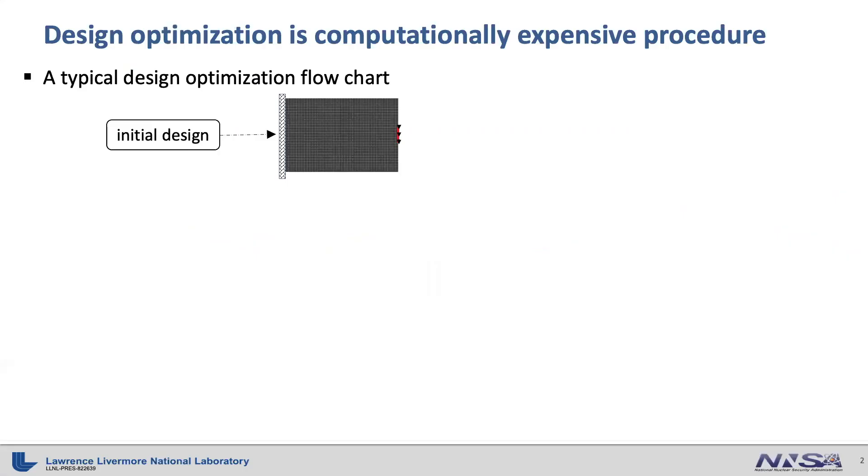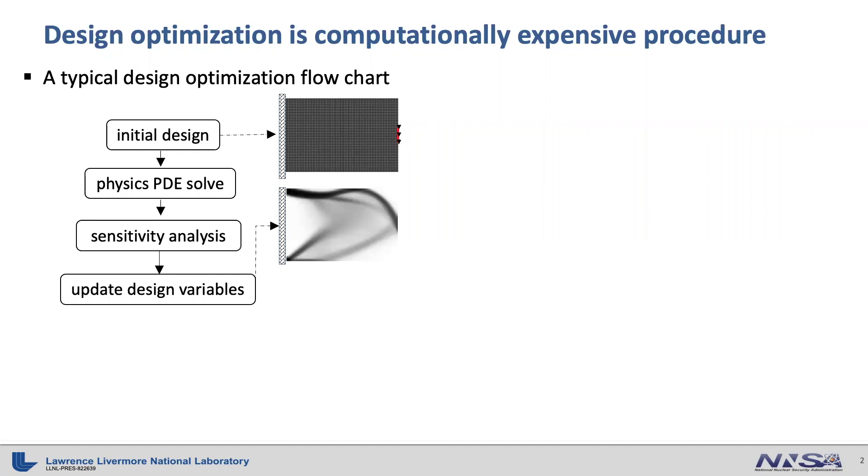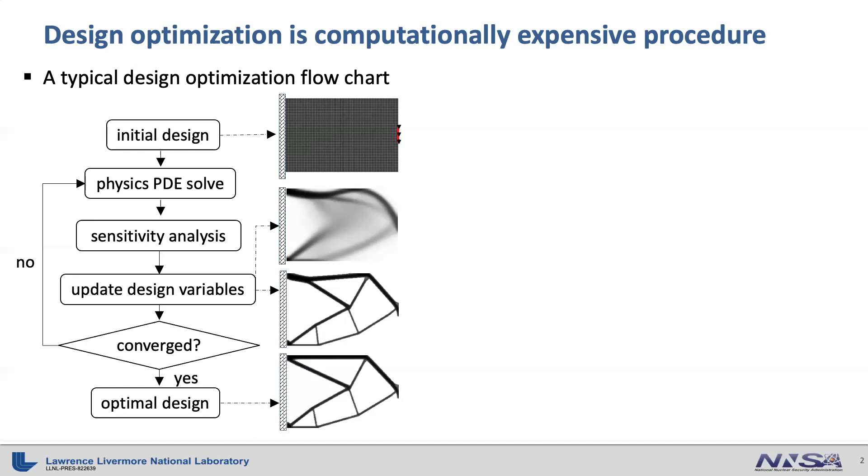A typical design optimization process starts with an initial design with a predefined computational domain, boundary conditions, and external forces. Then you solve a forward physics partial differential equation numerically, then evaluate function and gradients in sensitivity analysis in order to update design variables in gradient-based optimization solver. Then you check the optimality condition to see if the updated design is optimal or not. If not, then you go back to solve physics PDE with updated design variable and repeat the process until the optimality condition is met.